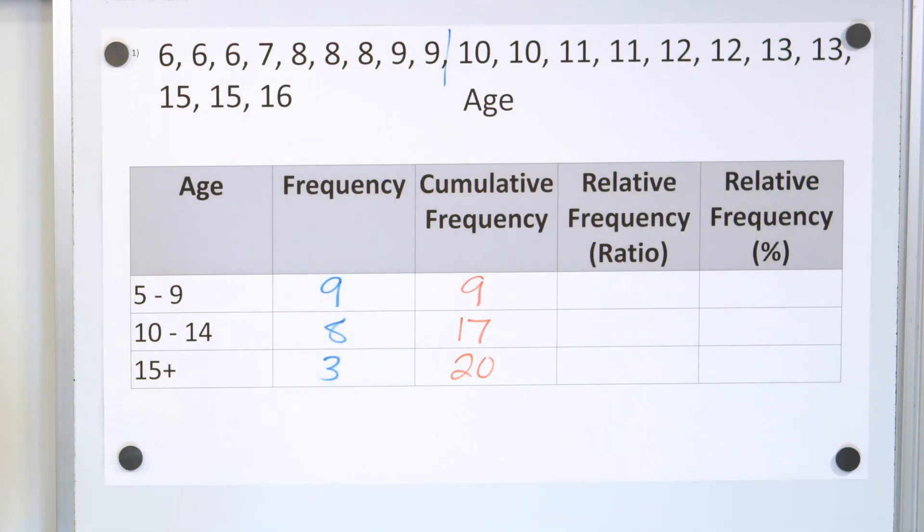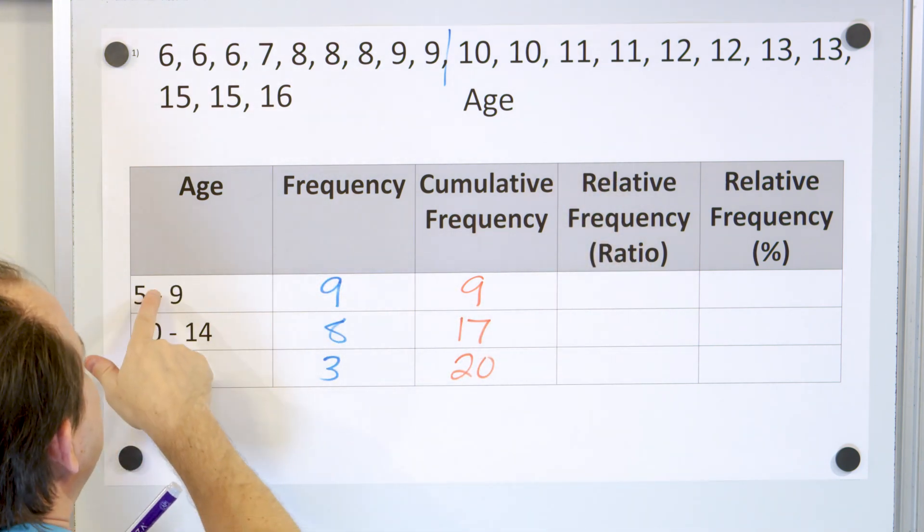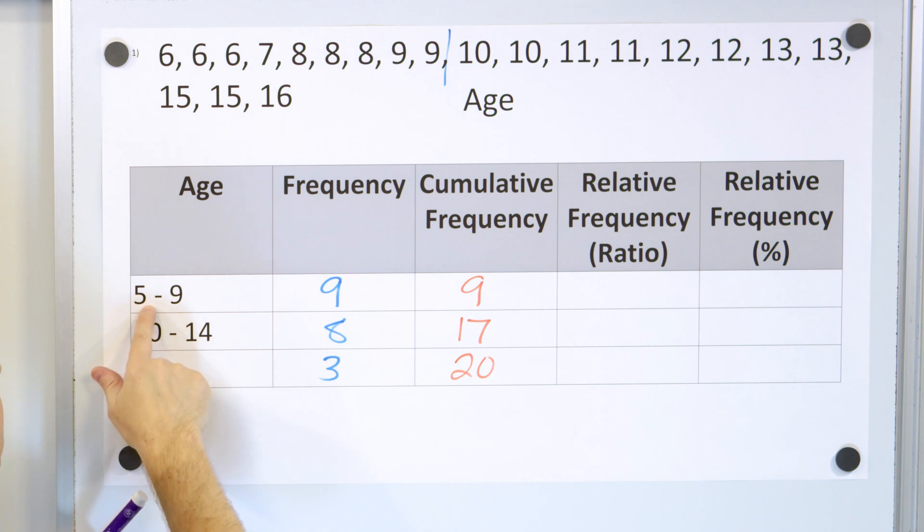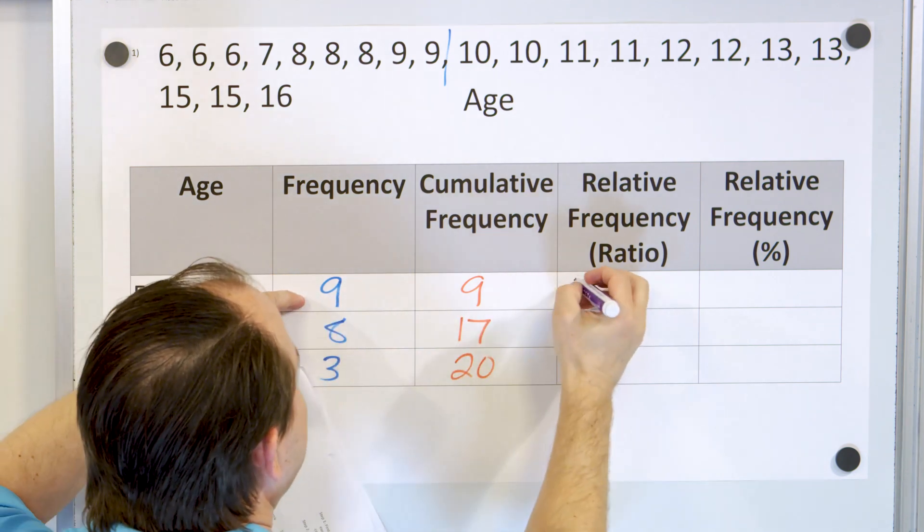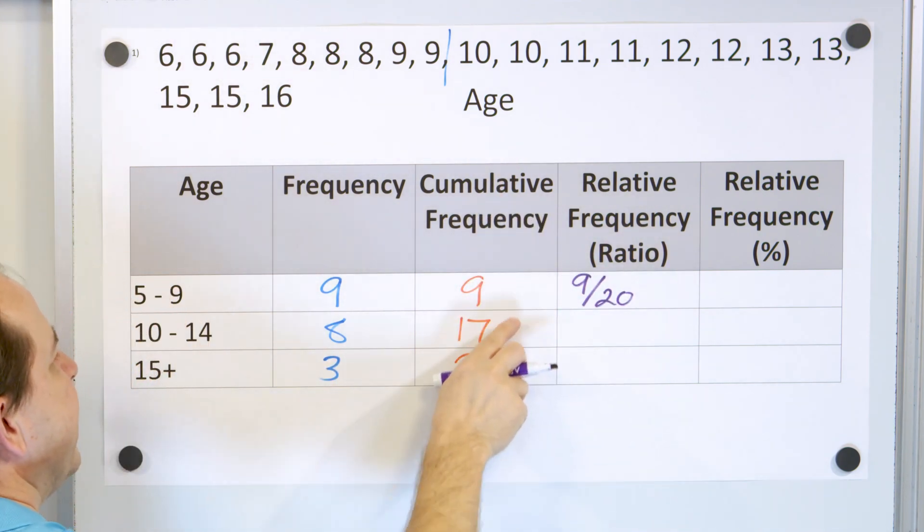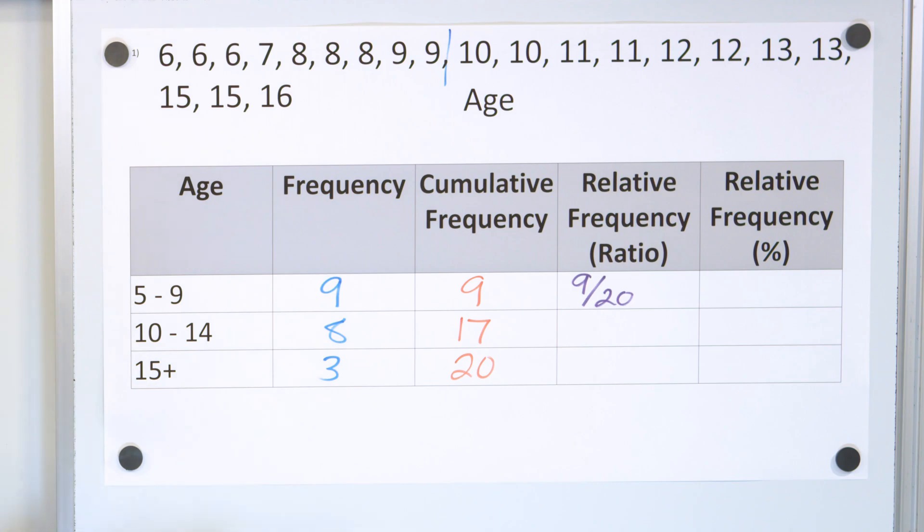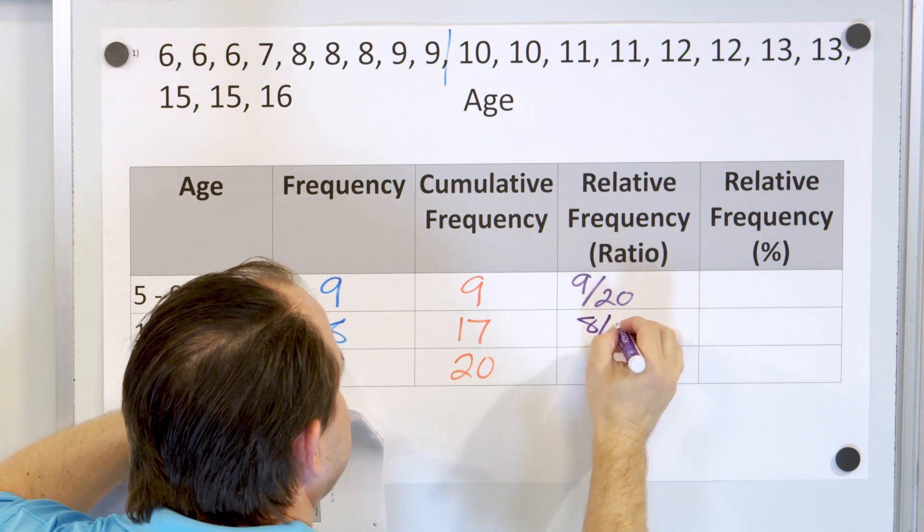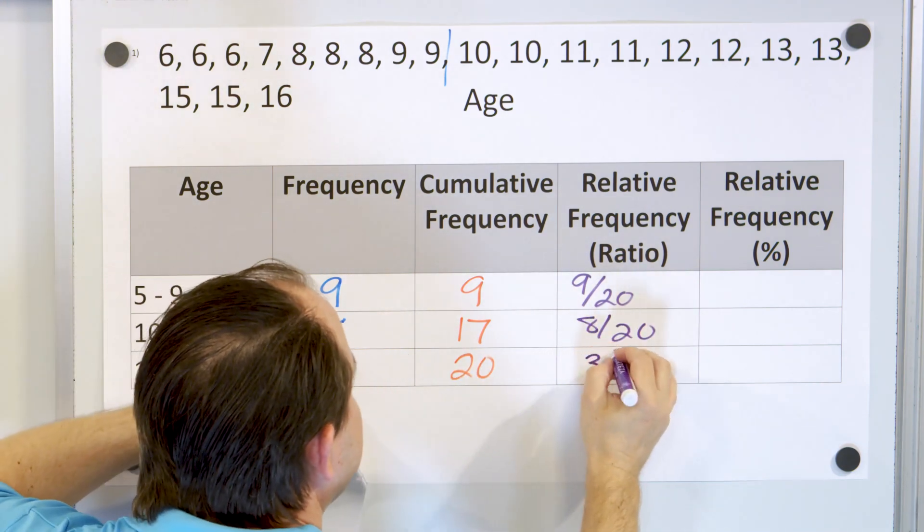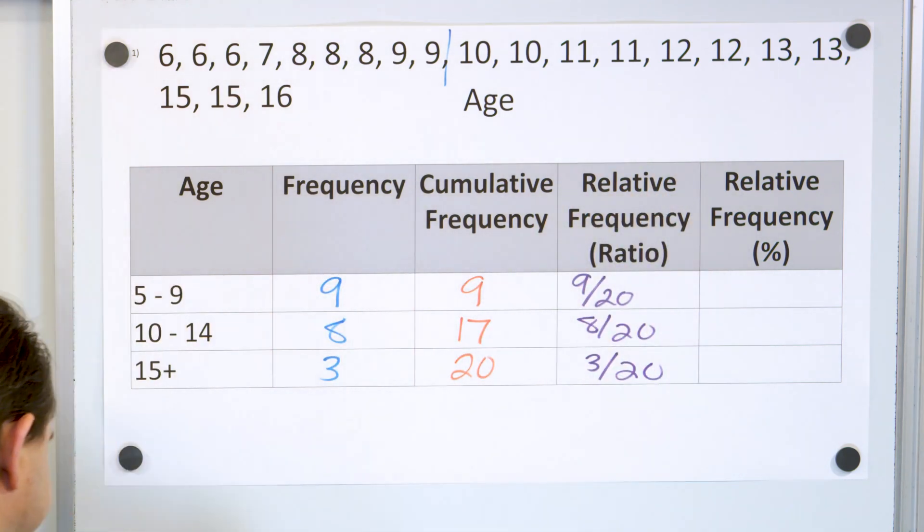Now the next step is to write down the relative frequency. This is basically how many people answered in this range compared to the total number of respondents. 9 people answered out of total of 20. This cumulative frequency is just adding up all of the total number of respondents. We count all of these up and you're going to get 20 different answers, 20 different data points. Here we have 8 people in this bucket out of 20. So it's 8 out of 20. And here is 3 people out of 20. So this is expressing the relative frequency but as a fraction, okay?